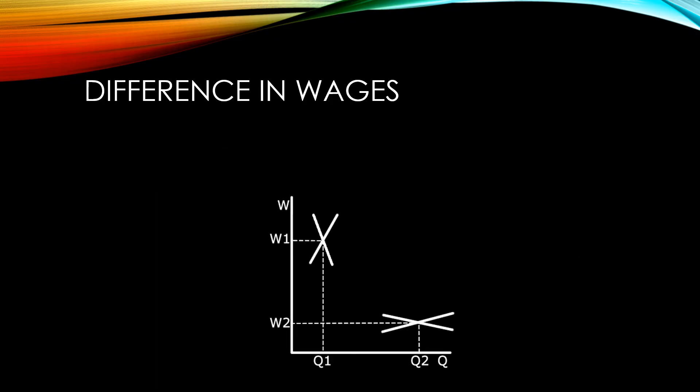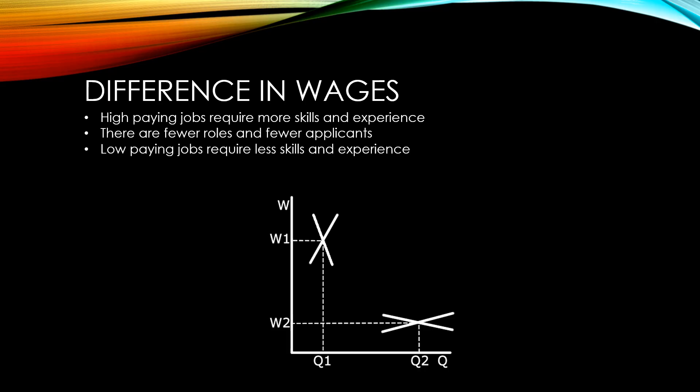Supply and demand can also help to explain the difference in wages that different people see. If we look at the point W1Q1, this represents high paying jobs like CEOs. These require more skills and experience. There are therefore fewer roles and fewer applicants. This means that demand and supply are both less elastic. This leads to higher wages and less people employed. When it comes to low paying jobs, less skill and experience is required. There's more different roles and more applicants to go for them. So both supply and demand are more elastic and we get a much lower wage with many more people employed at it.